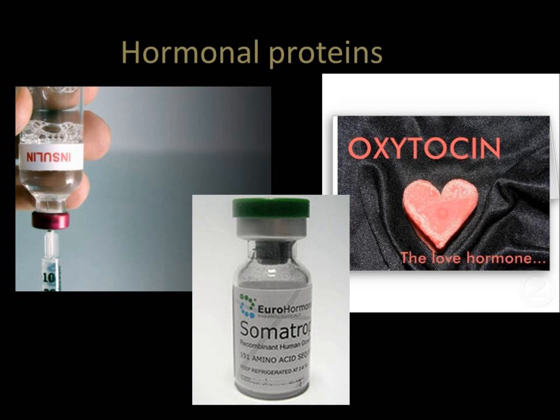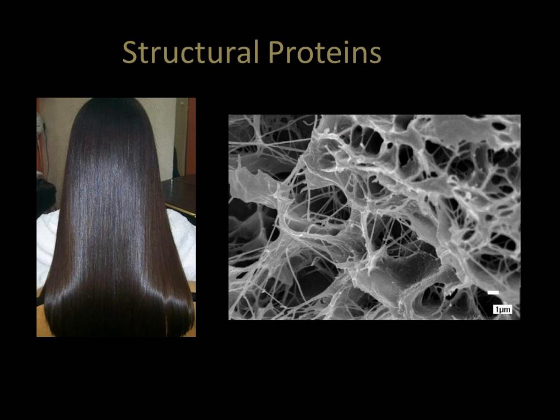Hormonal proteins are messenger proteins which help coordinate certain bodily activities. Examples include insulin, oxytocin, and somatotropin. Insulin regulates glucose metabolism by controlling the blood sugar concentration. Oxytocin stimulates contractions in females during childbirth. Somatotropin is a growth hormone that stimulates protein production in muscle cells.